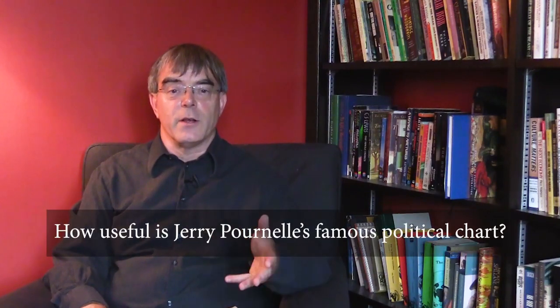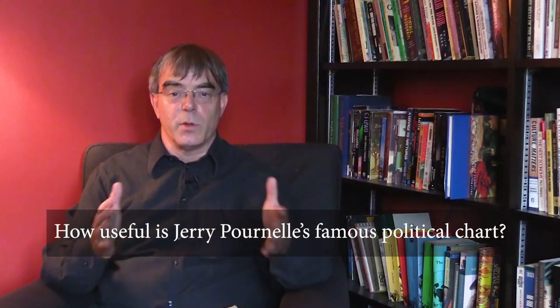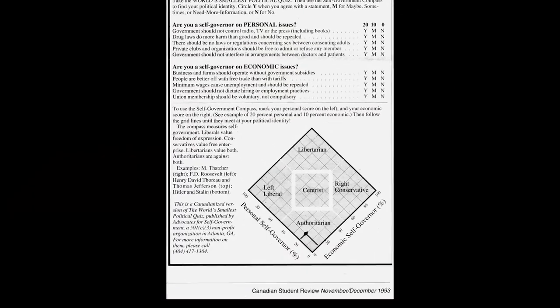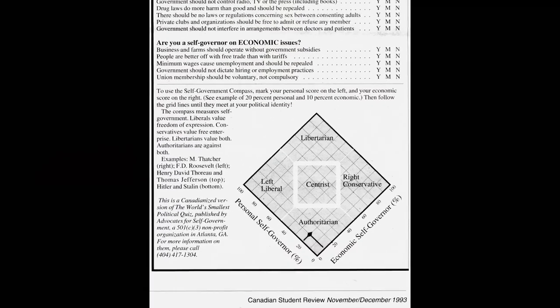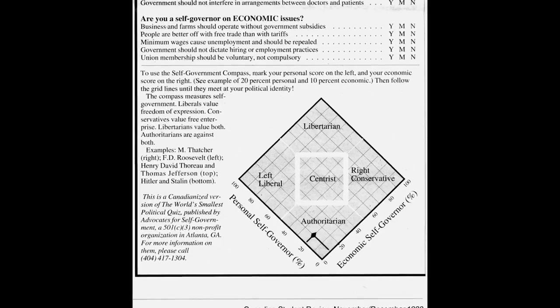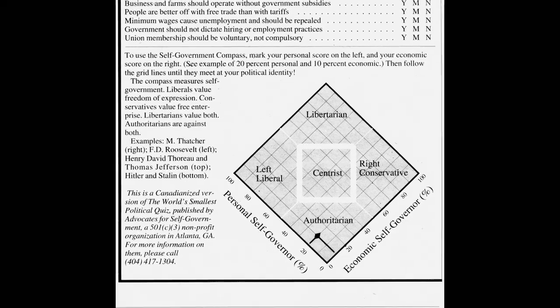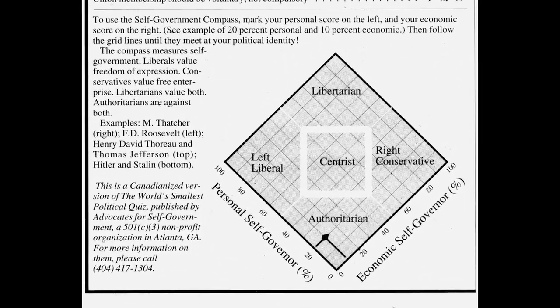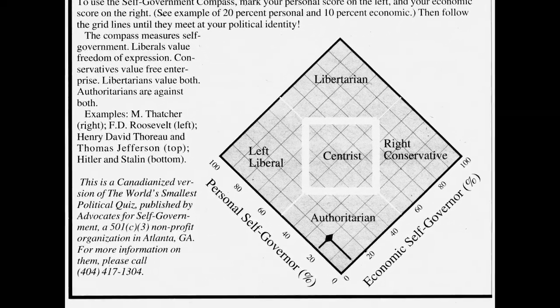Today's question comes from Isabel, and she asked me what I think of Jerry Pournelle's famous political chart. Of course, it's the chart that has economic freedom on one axis and social freedom on the other axis that the libertarians like to share with you to show that they're the only people who really respect freedom.